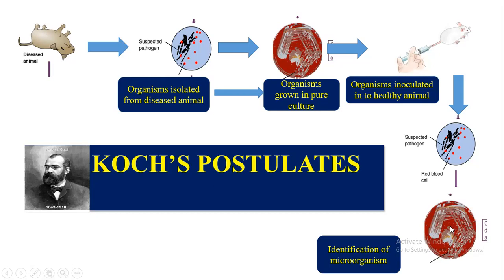The fourth postulate: the suspected pathogen, when inoculated again into culture media or pure culture, should produce colonies. The suspected bacteria should grow and be identified with microscopy.